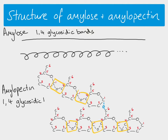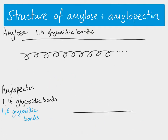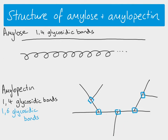The yellow bonds are 1,4 and that blue one represents a 1,6 glycosidic bond. We do not have 1,6 glycosidic bonds in amylose - we only see them in amylopectin. So if we draw it more simply, you can see a straight chain and a side branch. Each of those points where branching occurs would be the place where you see a 1,6 glycosidic bond.